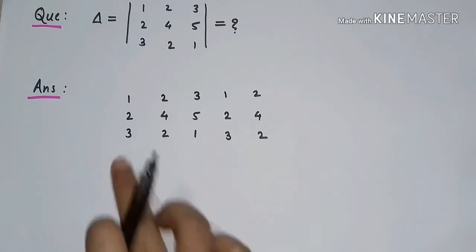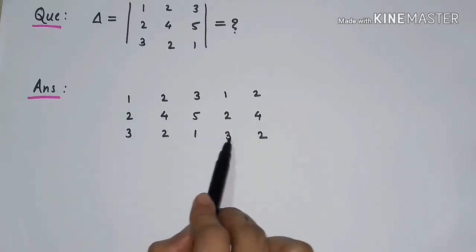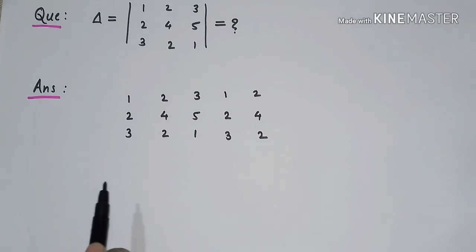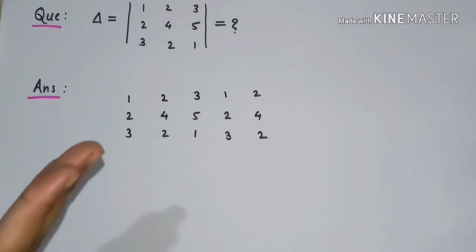Now we have an arrangement of 5 columns. In this arrangement we will get 6 diagonals: 3 left hand side diagonals and 3 right hand side diagonals.